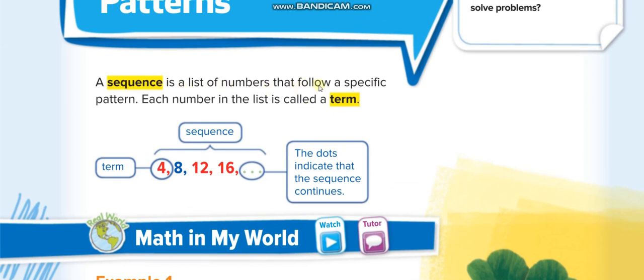A sequence is a list of numbers that follow a specific pattern. Each number in the list is called a term. For example, this one: 4, 8, 12, 16. If you look at the sequence you'll find out that each time they're adding 4, or you can say it's a multiplication table of 4.